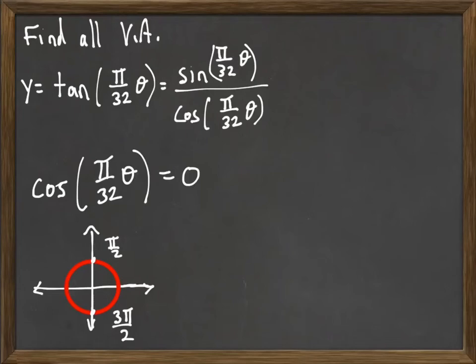And so, as we write this out, that π over 32 θ will be equal to π over 2, plus any multiple of π.